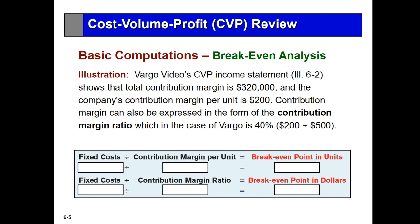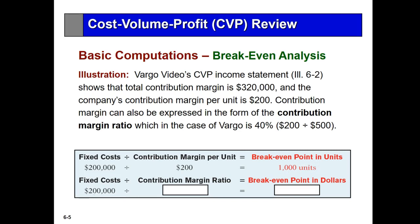We can also express the contribution margin as a ratio — that is, the contribution margin as a percentage of sales — which in this case is 40%. To determine the break-even point in units, we divide fixed costs by the contribution margin per unit. The 100,000 units sell for $500 a unit, giving a break-even point of $5,500,000 in dollars — just the same figure expressed in different ways.